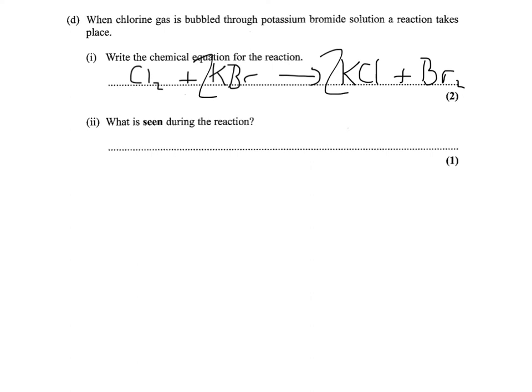And what's seen during this reaction? Well you're bubbling chlorine into this substance and you're forming bromine. Now bearing in mind this is a solution, the bromine is relatively soluble in water, and you'll see bromine water forming. And hopefully you'll remember that bromine water is an orange liquid.